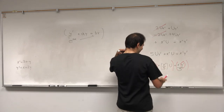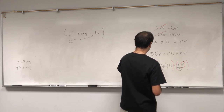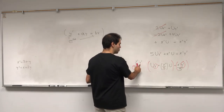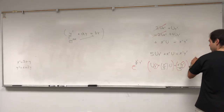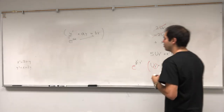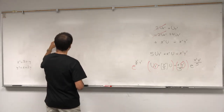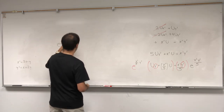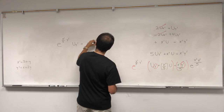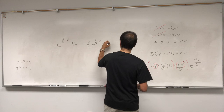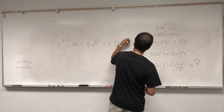We multiply this by e to the (x prime over 5) times y prime. The derivative of this factor with respect to y prime is indeed (x prime over 5) e to the (x prime y prime over 5), and we do this on both sides. So we have: e to the (x prime y prime over 5) times uy prime, plus (x prime over 5) e to the (x prime y prime over 5) times u, equals (x prime y prime over 5) e to the (x prime y prime over 5).